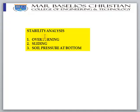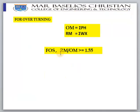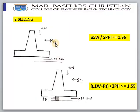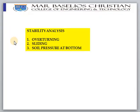The second check is against sliding. Sliding occurs because of the horizontal force applied by the soil — there is a chance the wall might move away horizontally. In this video we will cover only overturning and sliding; soil pressure will be covered in another video.